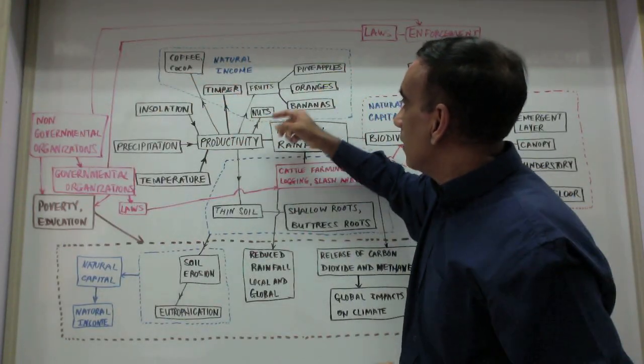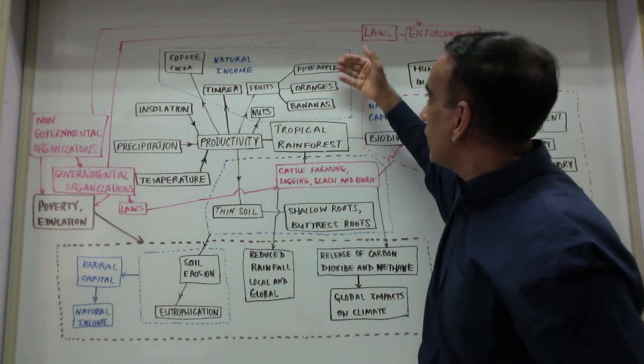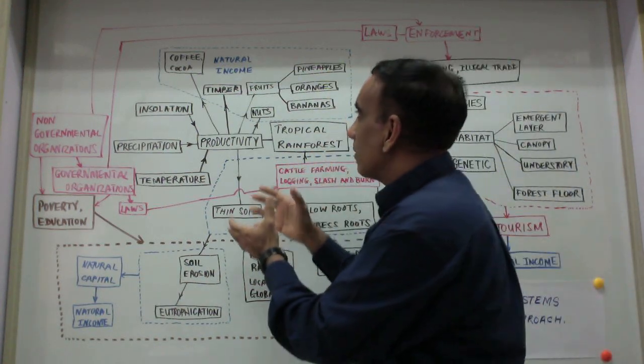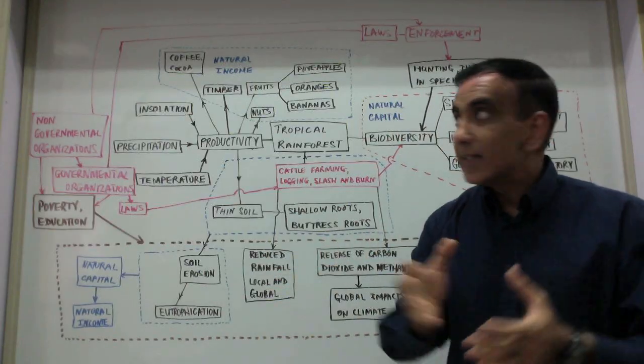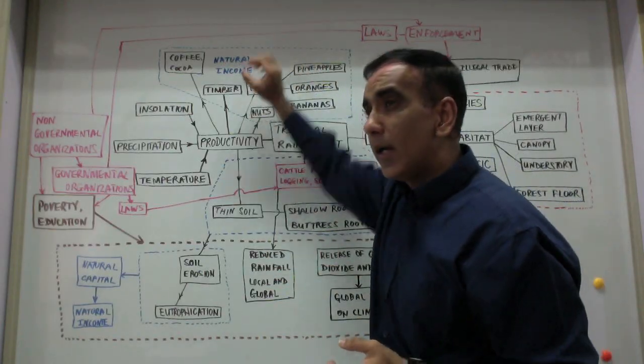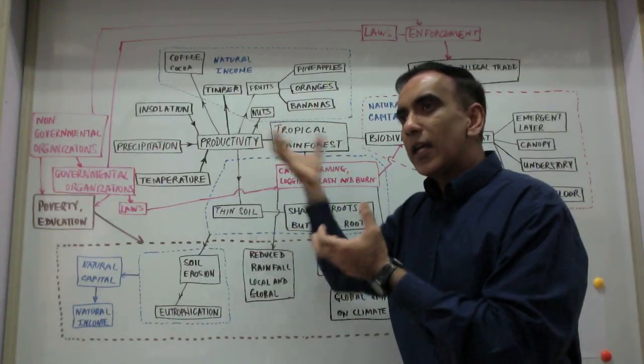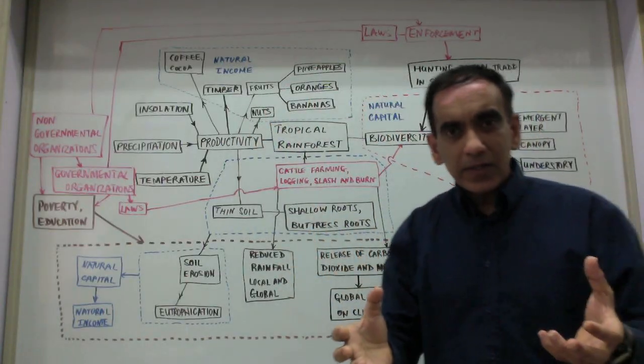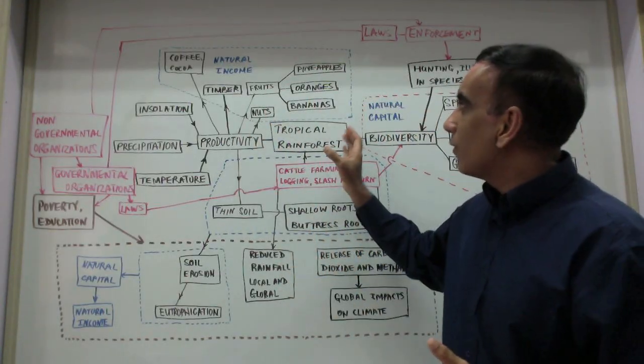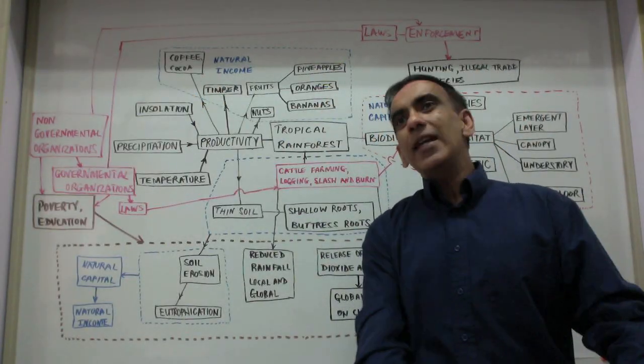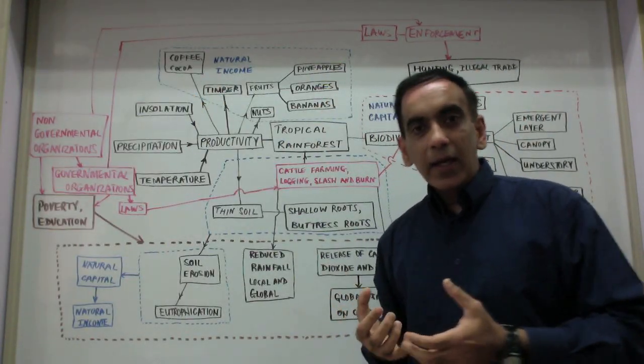And all of these products can be used to generate a natural income. And when we harvest these products and get the natural income in a manner that's not going to allow for the depletion of the rainforest, in other words we take the interest out of nature and we leave the capital.